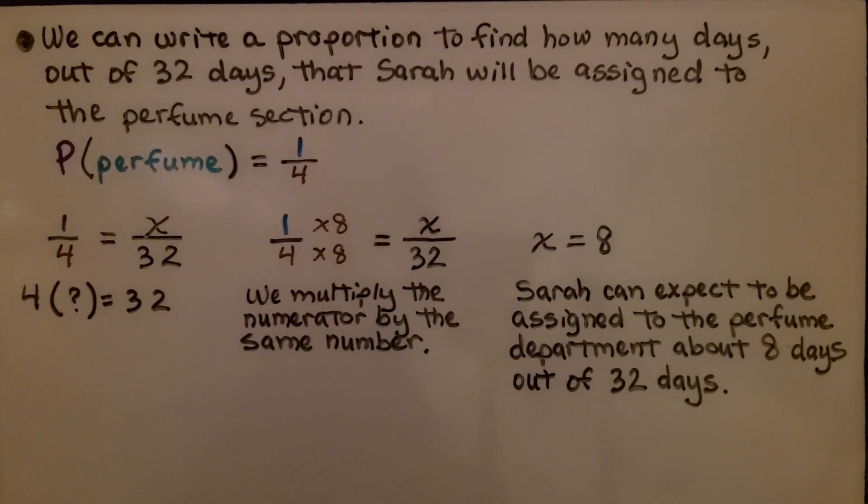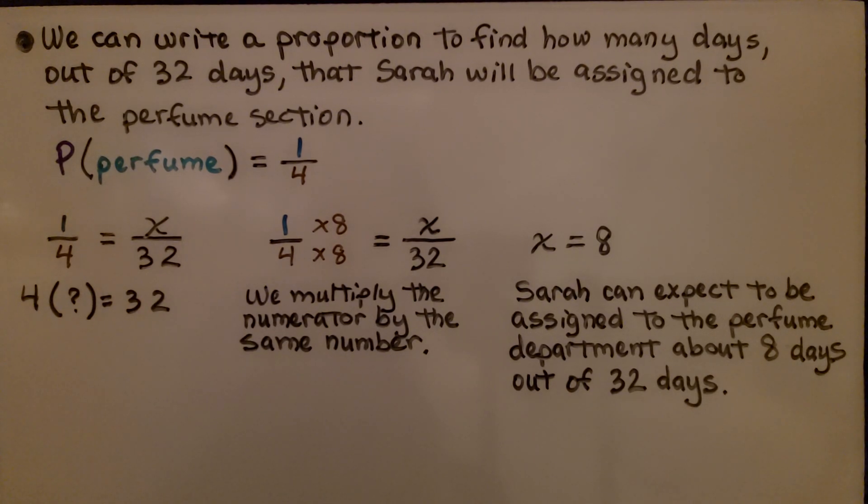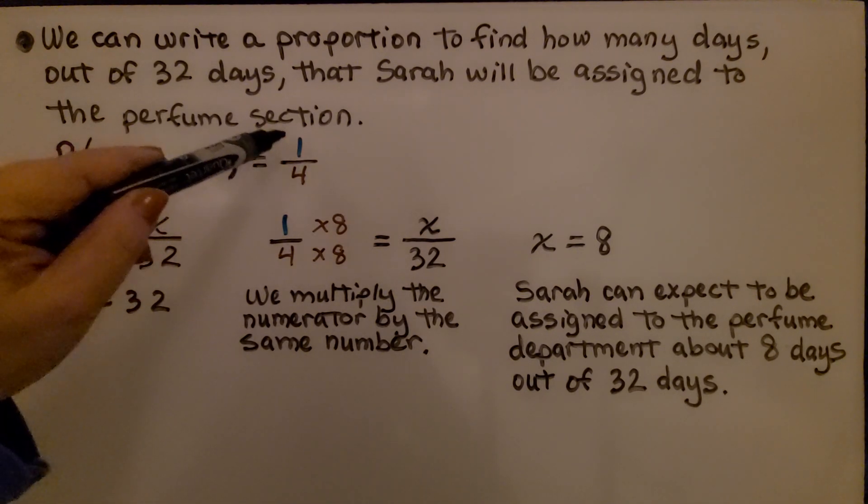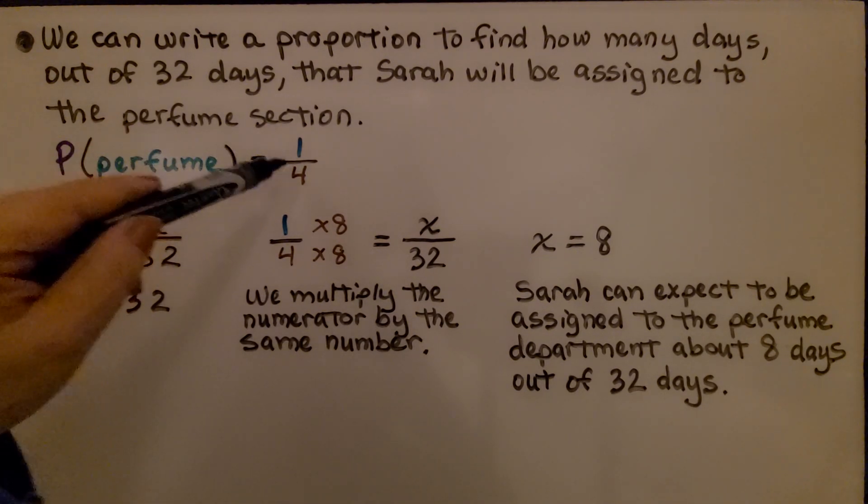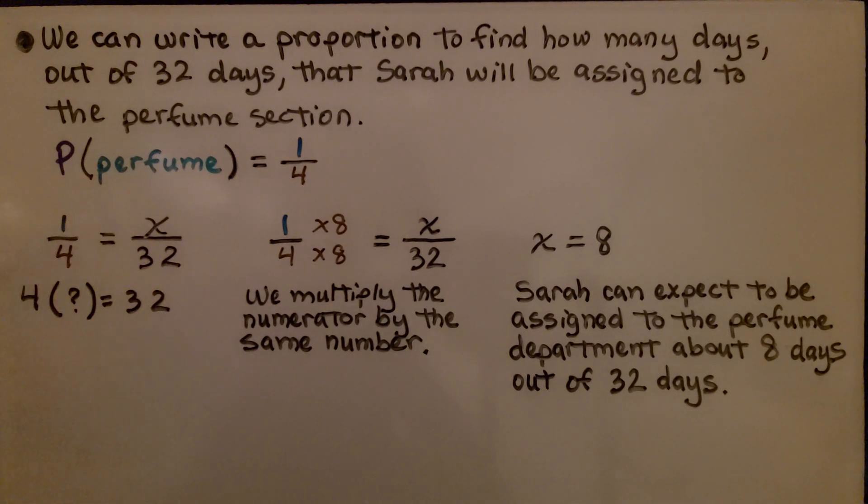We can write a proportion to find how many days out of 32 days that Sarah will be assigned to the perfume section. The probability of working perfume is 1/4. Perfume is 1 out of 4 possible sections. Our proportion is 1/4 is equal to x over 32.